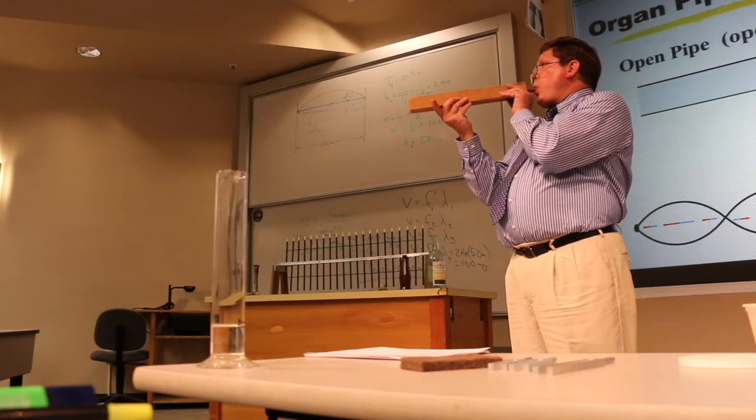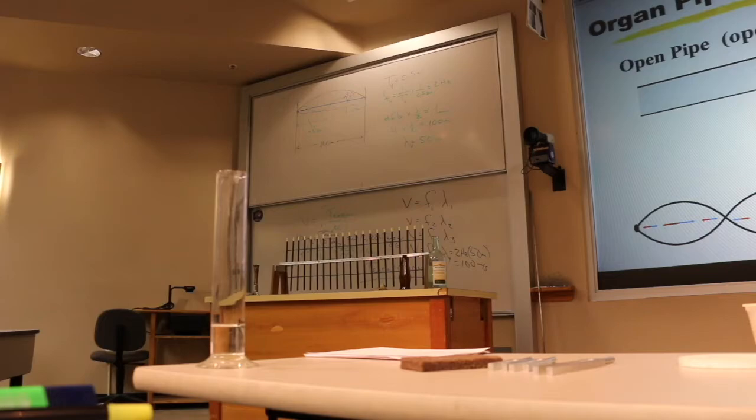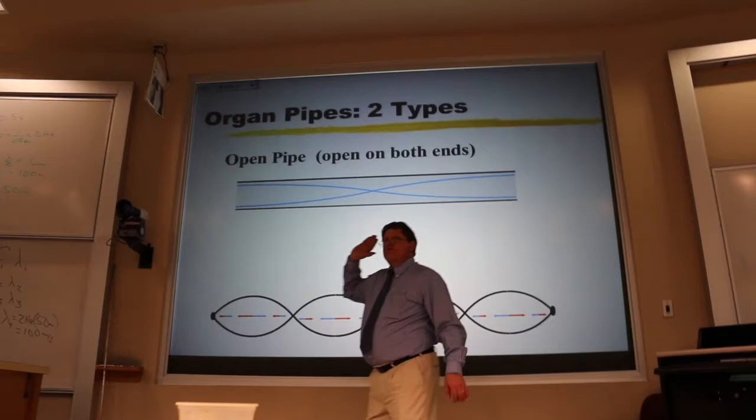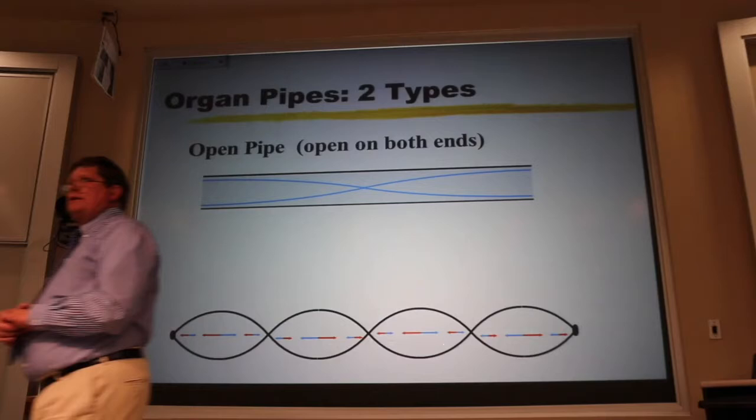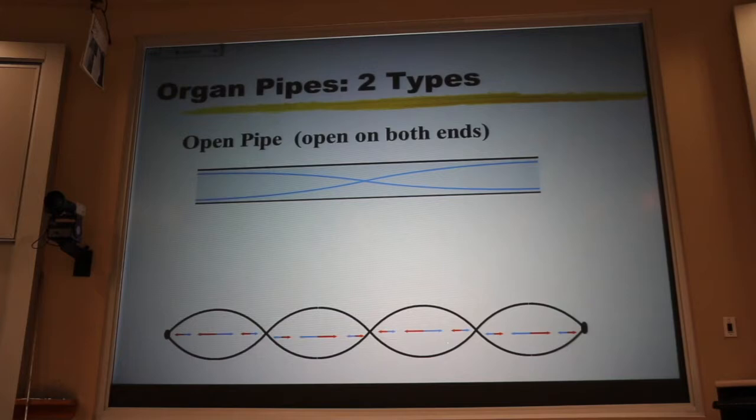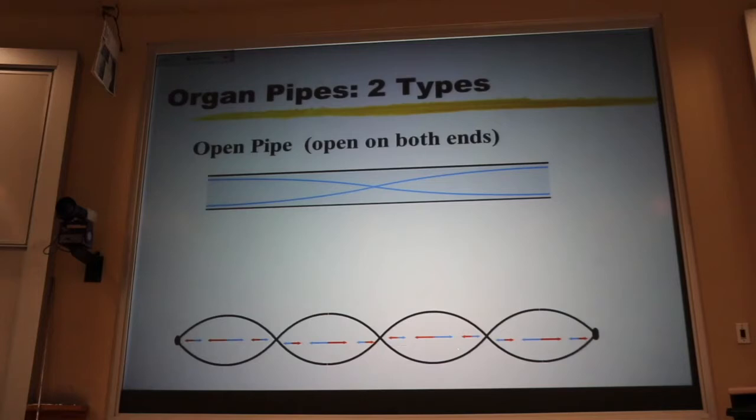Now because the ends are open, they have to be anti-nodes. I can't go straight from an anti-node to an anti-node without having a node in between. If I just went from an anti-node to an anti-node, that's wind going right through the pipe. The node is needed for the sloshing, the whoosh. And that sloshing is what you hear as sound.